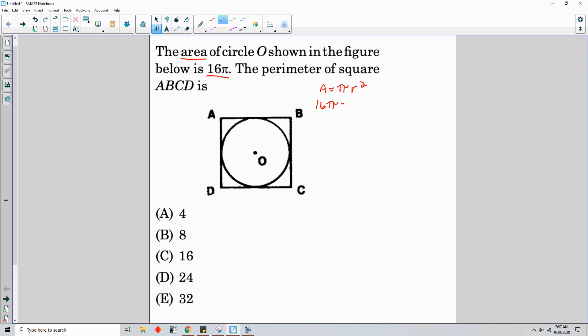then the π's cancel on each side. So the radius squared equals 16. Take the square root of both sides, and you find your radius is the square root of 16, or 4. So r is 4.